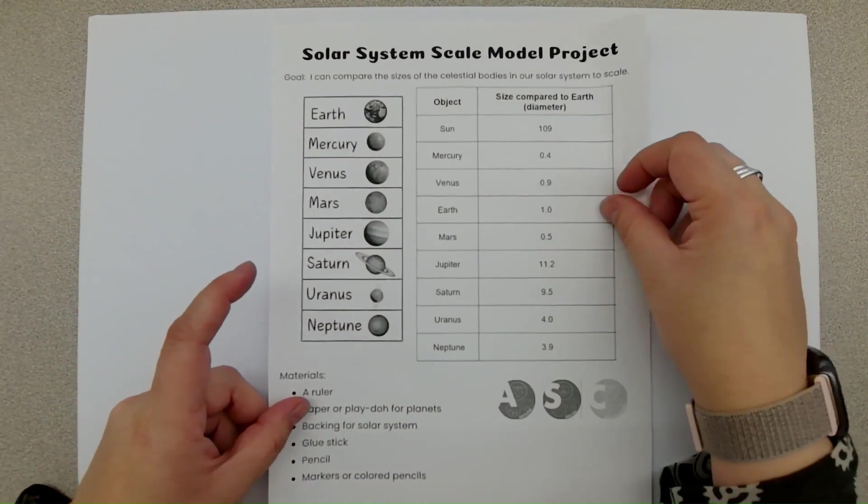But by doing distance, since our solar systems are so far away from each other, like in the solar system, it really wouldn't make sense to do by scale for distance. So instead, we're going to be doing scale by size.